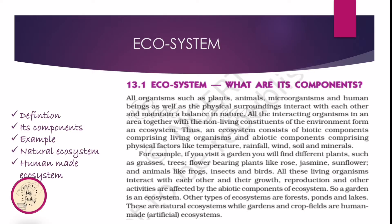In the ecosystem, two components are identified. The first one is Biotic. The second one is Abiotic. Biotic and Abiotic — these two are ecosystem components.